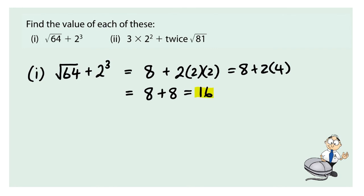Question 2. 3 times 2 squared plus twice the square root of 81. The order of operations is important in this question. Twice means 2 times, so this is 2 times the square root of 81.